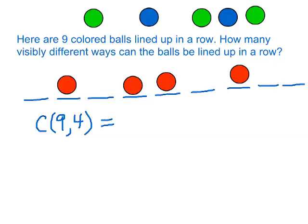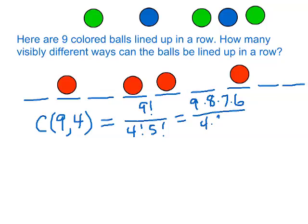And that would be nine factorial divided by four factorial and five factorial, which is nine times eight times seven times six divided by four times three times two, which equals 126. So there are 126 ways of placing the red balls.